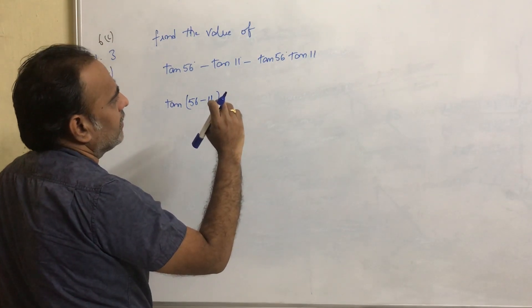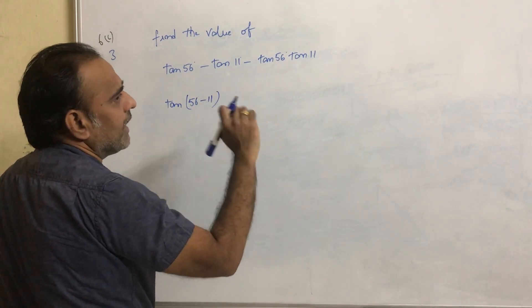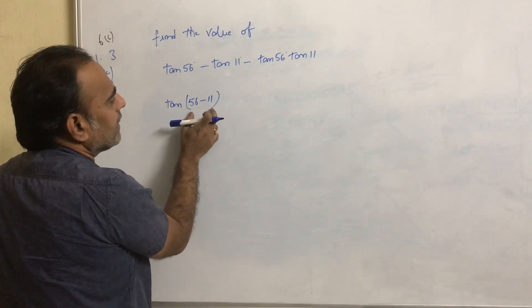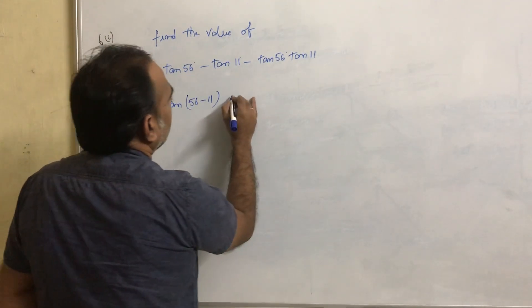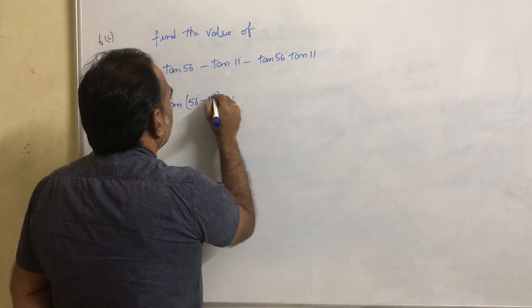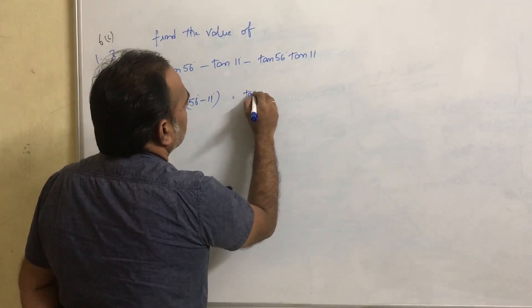We know that tan(a - b), the first term, the terms which are in numerator is tan a - tan b. This is tan a - tan b, right? That's why I consider tan(a - b). What is tan 56° - tan 11°?